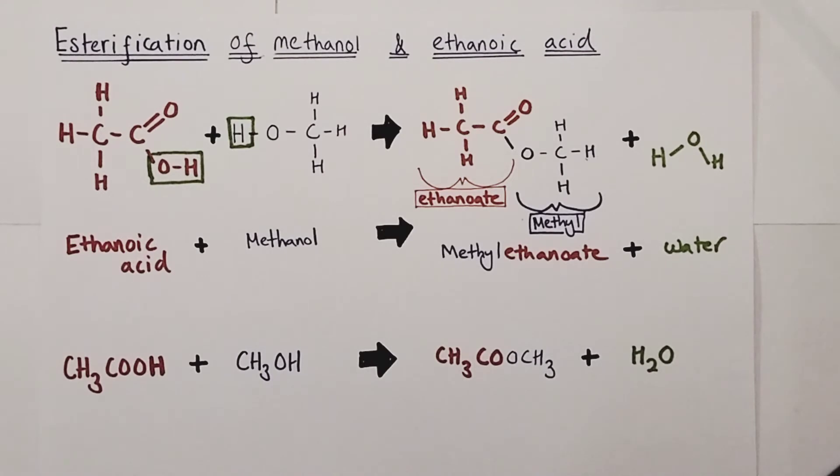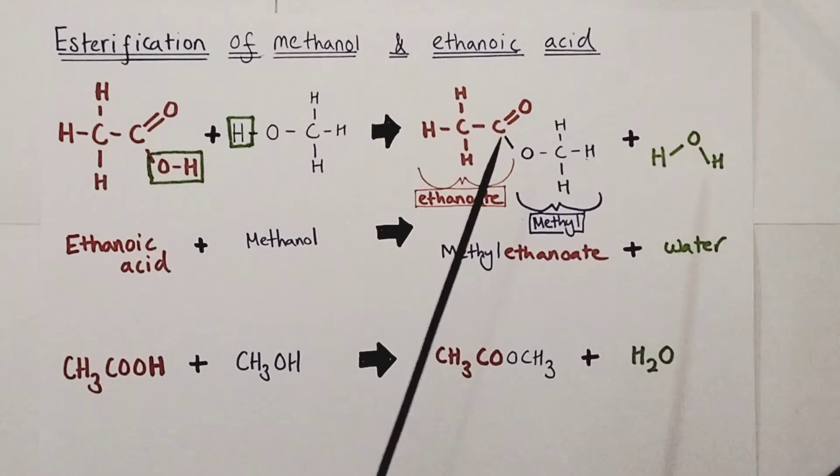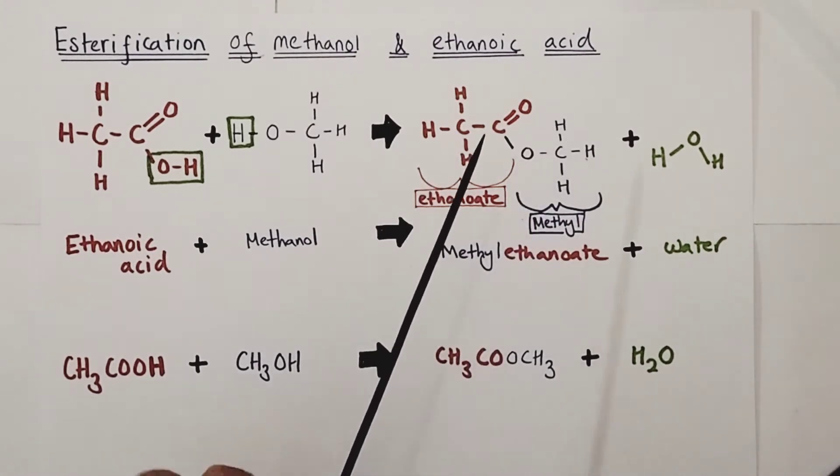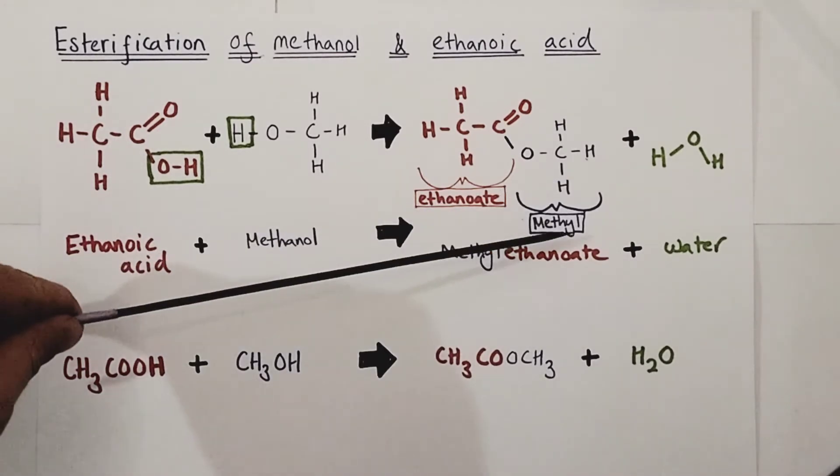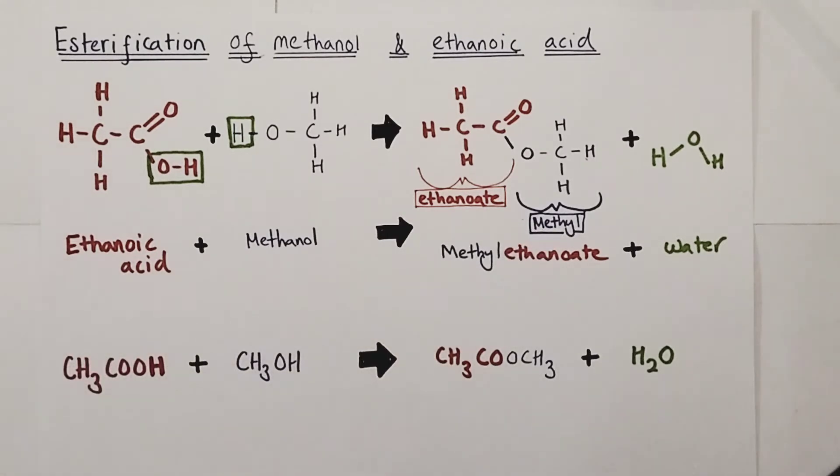To name the ester, you look at the piece that came originally from the alcohol and think about how many carbons is in that section of the molecule. In this case it's one carbon, so the prefix is meth. Rather than finishing with the alcohol name which would be methanol, you cut away the -anol and replace it with -yl, as if it's a branch of an alcohol chain. That gives the first part of the name of the ester, which has been derived from what was originally the alcohol.